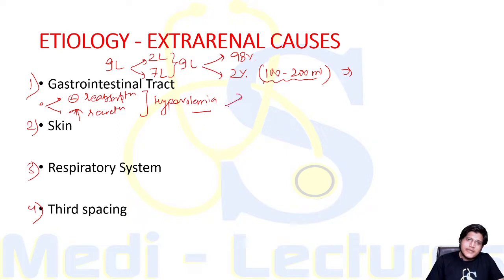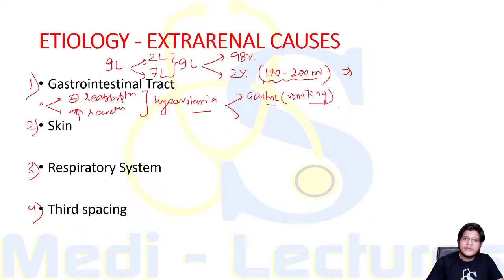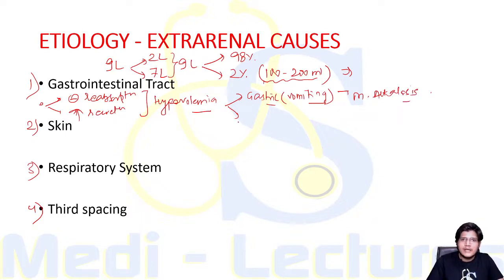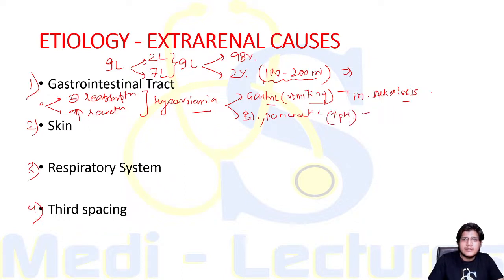Depending on the type of secretion lost: if the secretion is gastric — that is, if a patient has excessive vomiting — the fluid lost is acidic, and this will lead to metabolic alkalosis since acid is being lost. On the other hand, secretions like biliary, pancreatic, and intestinal fluids have a high pH, and loss of these will lead to metabolic acidosis.